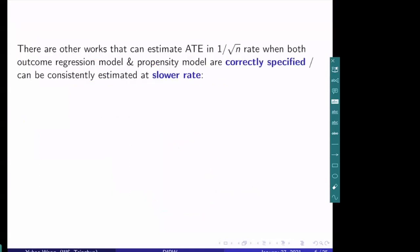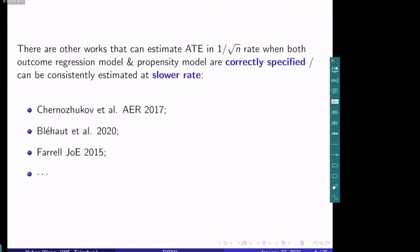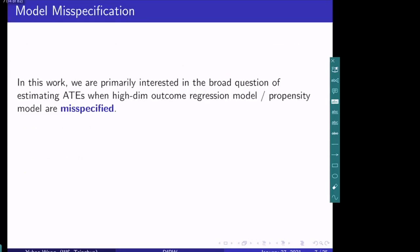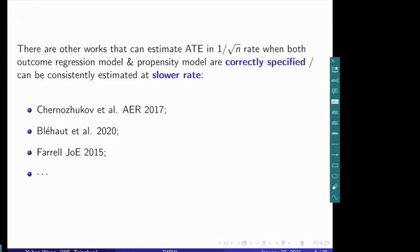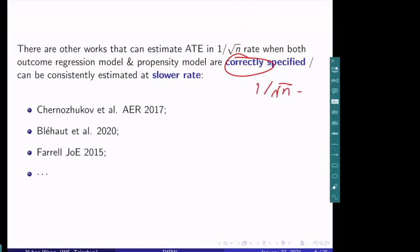In addition to the AIPW estimator, there are other works that can estimate the average treatment effect at the 1/√N rate when both the outcome regression and propensity models are correctly specified, or consistently estimated at a slower rate — for example, from Chernozhukov and also from Farrell and many other papers. A common feature of all these methods is that they require some pre-specification of the outcome regression and propensity models to be correct.